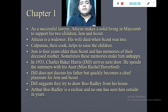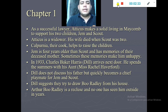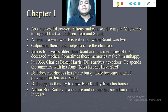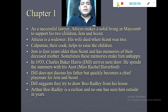Jem is four years older than Scout and has memories of his mom, but he doesn't like to remember her because it makes him uncomfortable and unhappy. In 1933, Charles Baker Harris — called Dill — arrives and spends the summer with his aunt, Miss Rachel. Dill doesn't discuss his father but quickly becomes a very good friend of Scout and Jem.